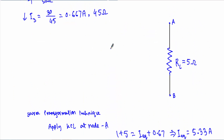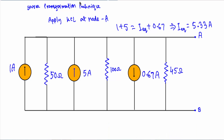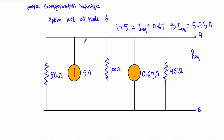So our current source will have a value of 5.33 ampere — this current source is known as I_equivalent. Now I will connect the A and B terminal, and with respect to this AB terminal I have to calculate R_equivalent. To calculate the equivalent resistance of any circuit, we replace voltage sources with short circuits and current sources with open circuits, therefore I will remove the current sources from our network.